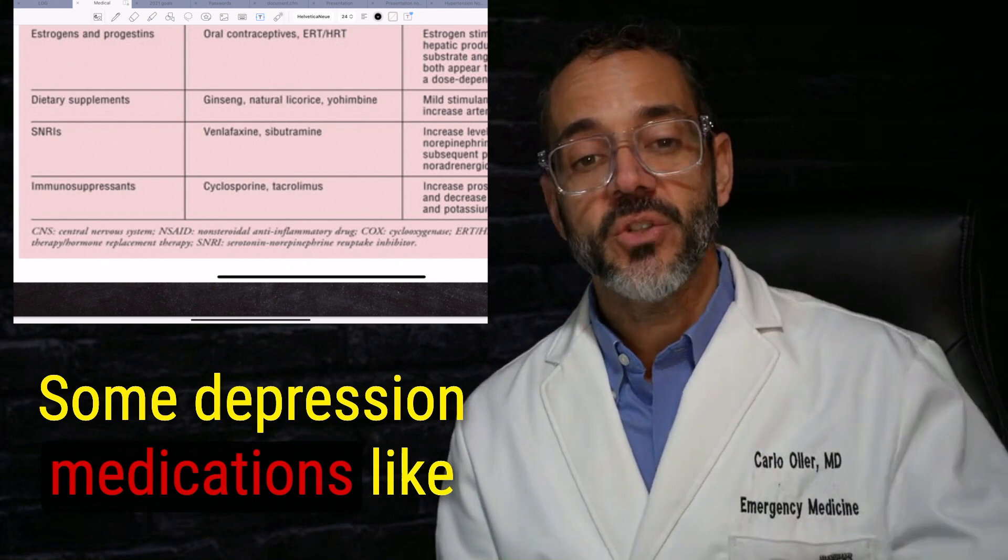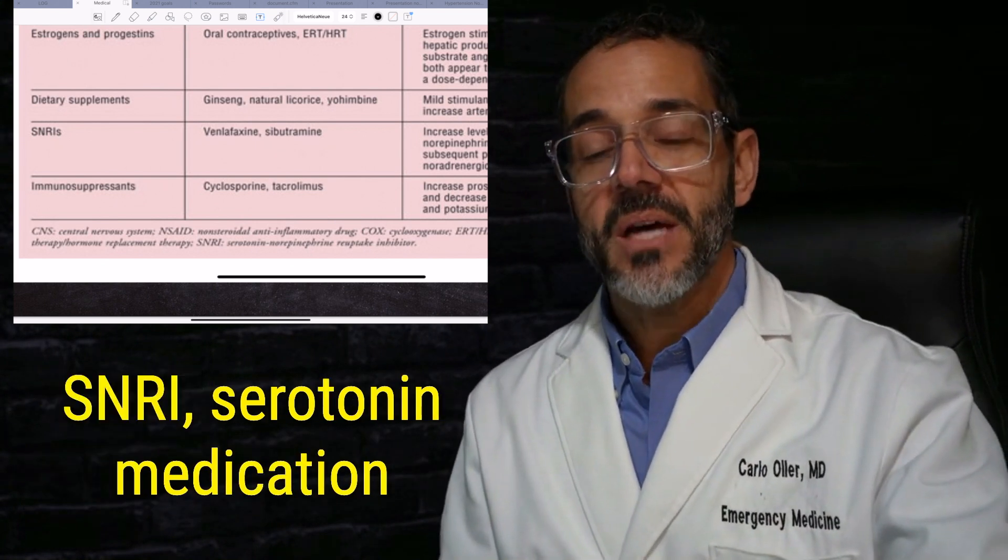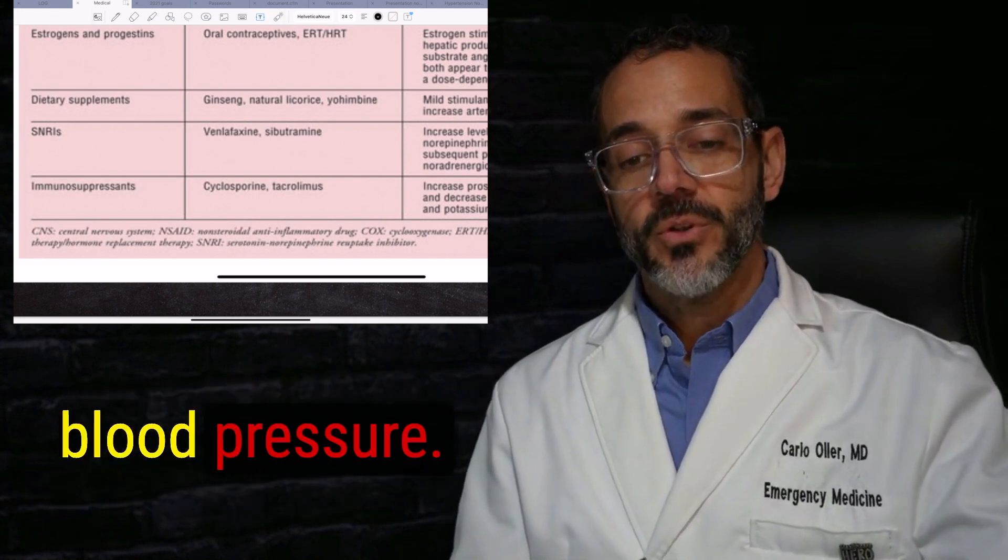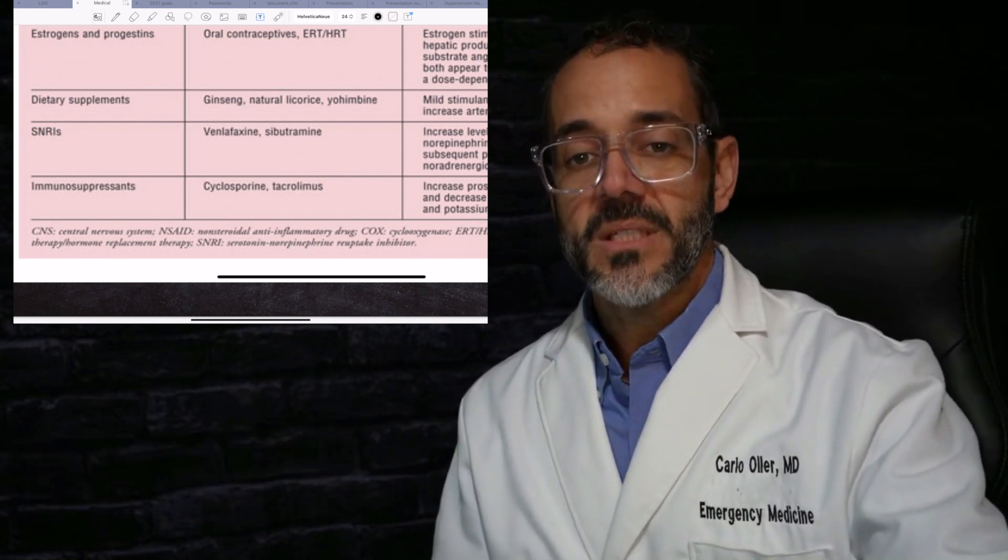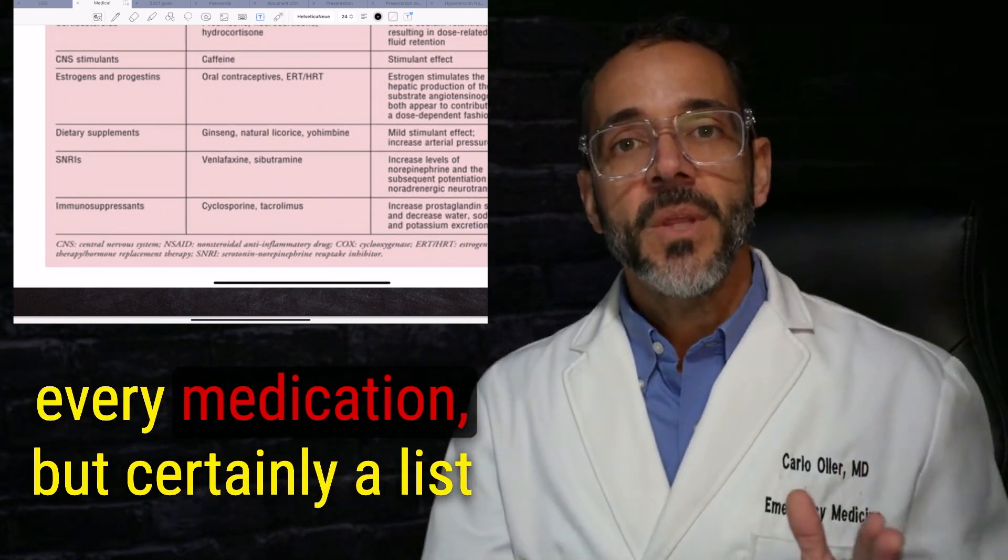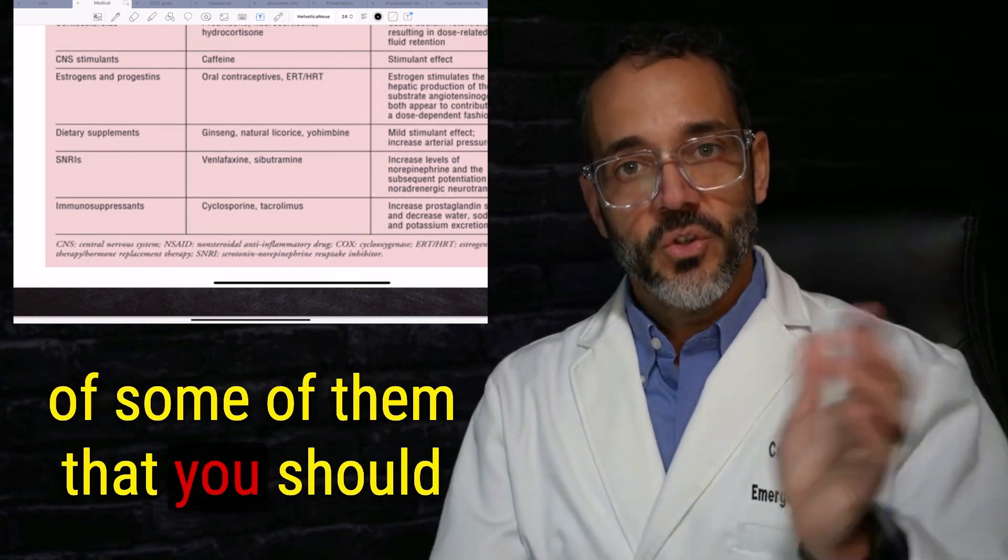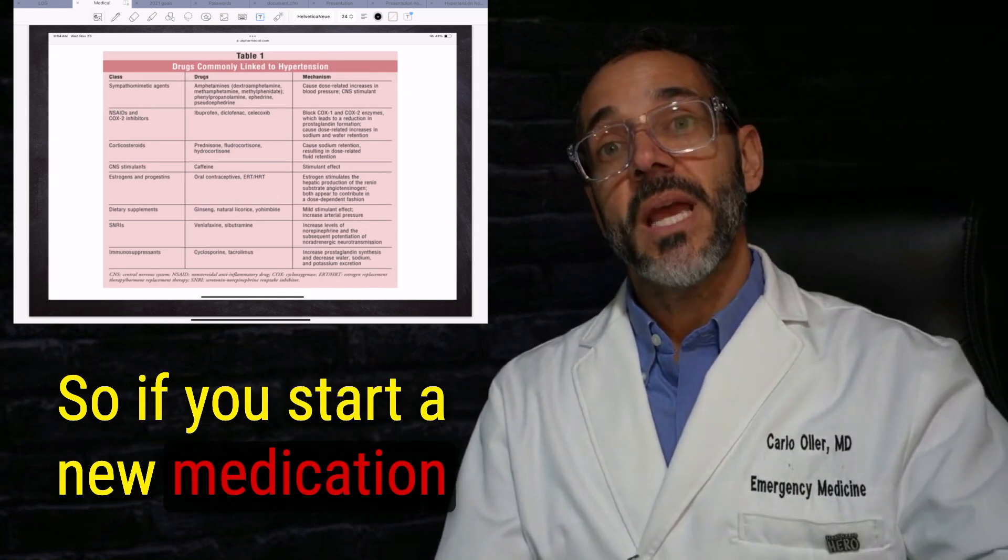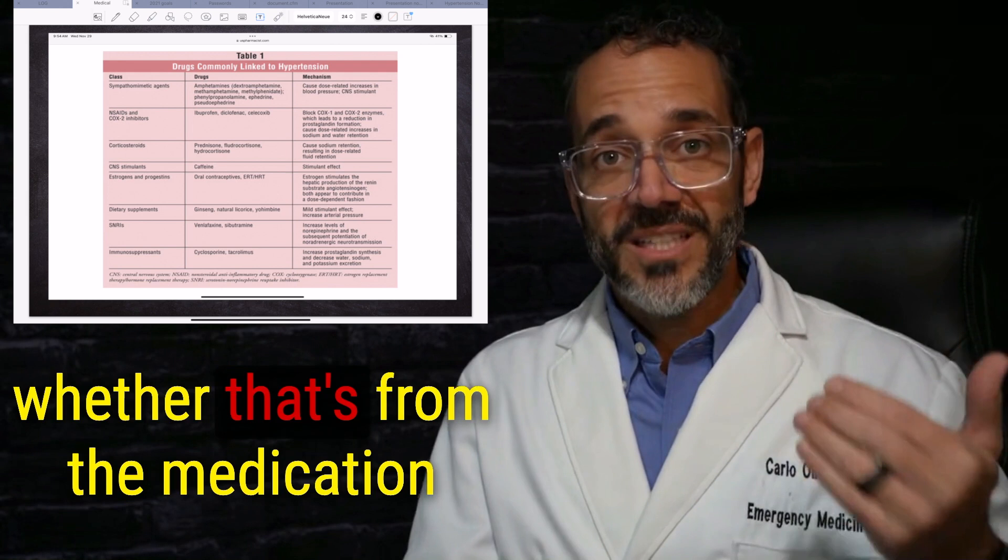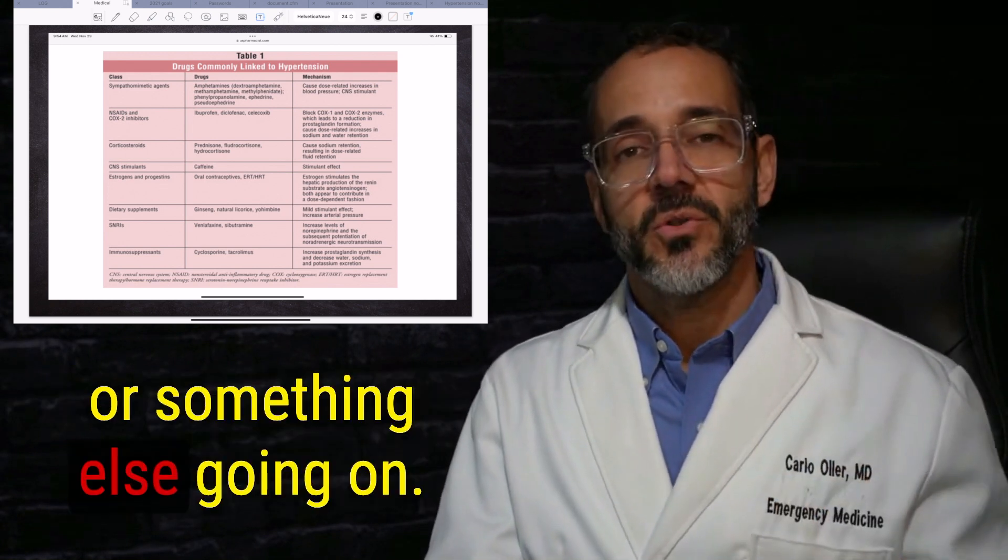Some depression medications, like SNRIs, serotonin medication related, those will elevate your blood pressure, and some immunosuppressants. By no means, this is the complete list of every medication, but certainly a list of some of them that you should be aware of. So if you start a new medication and your blood pressure spikes, then you should definitely consider whether that's from the medication or something else going on.